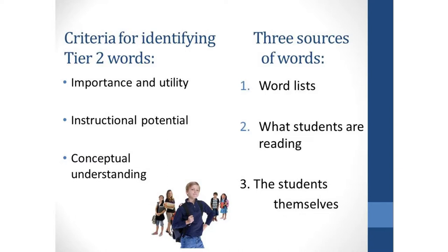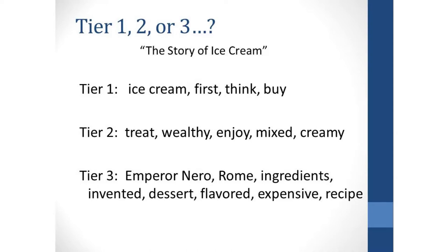You don't have the story of ice cream in front of you, but here's an example of what a teacher determined would be tier one, tier two, and tier three words from that text. The tier one words she thought students would likely know — she might double check with her ELLs ahead of time. The tier two words are those she's going to spend time and effort teaching. For a literature text, tier three words are explained briefly for comprehension and then we move on.